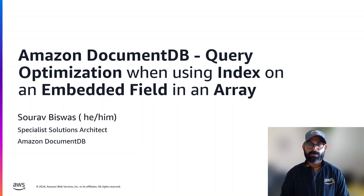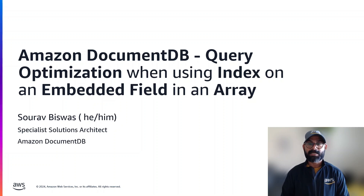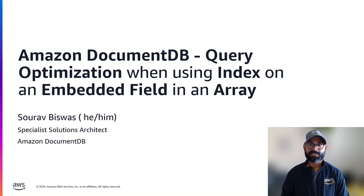Today we are going to talk about a use case where you have documents with arrays of nested JSON objects and you want to query based on fields from those JSON objects. You will create indices on those embedded fields and then query using a $elemMatch. Let's see how you can optimize queries like these based on the knowledge of the data that you have stored in those collections.